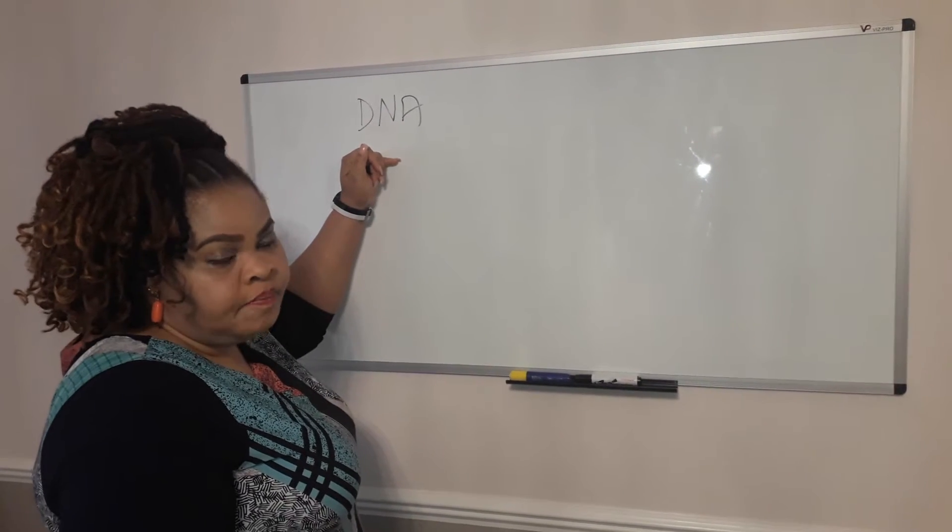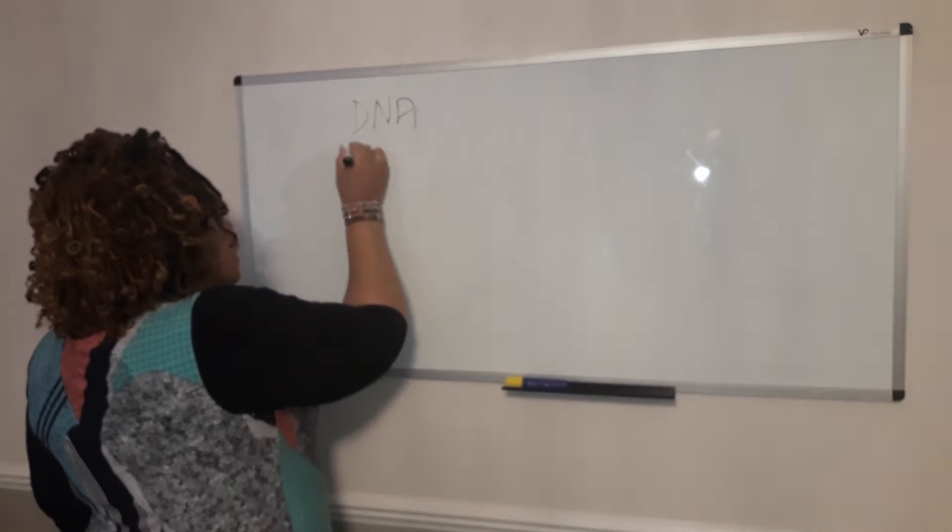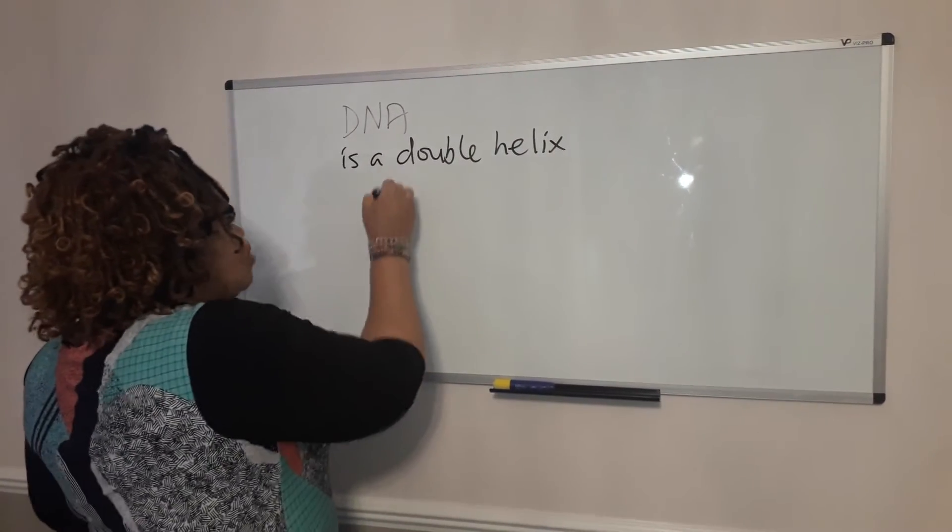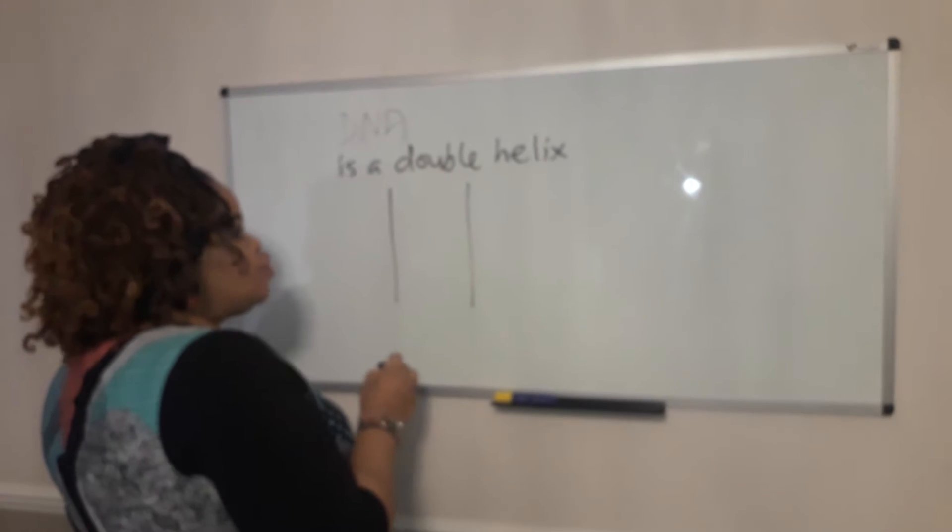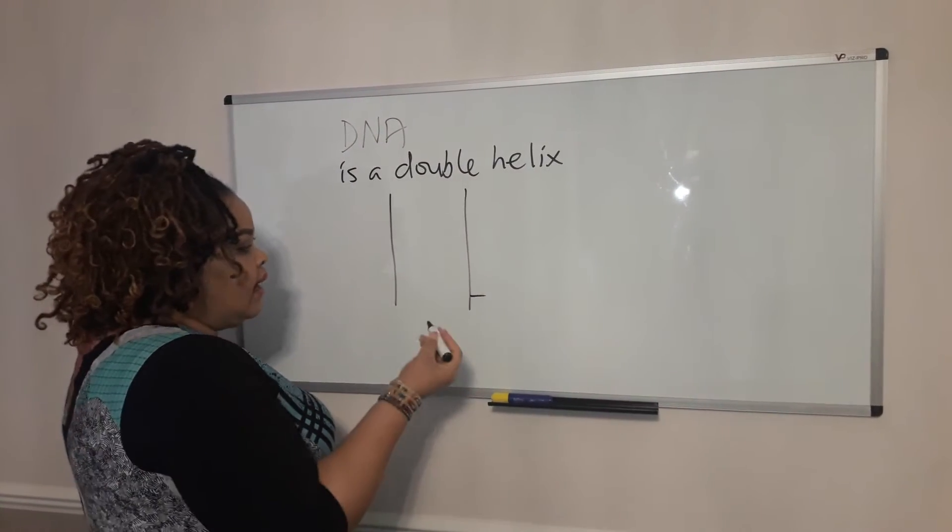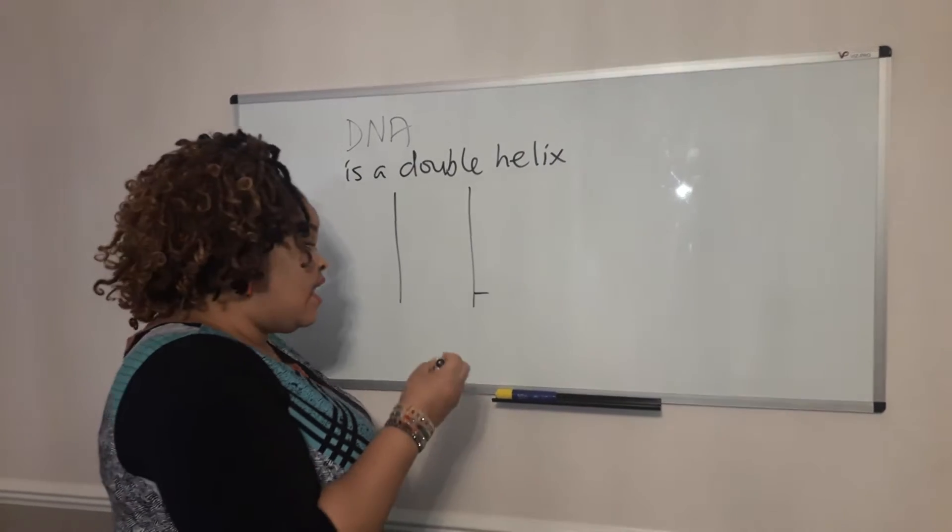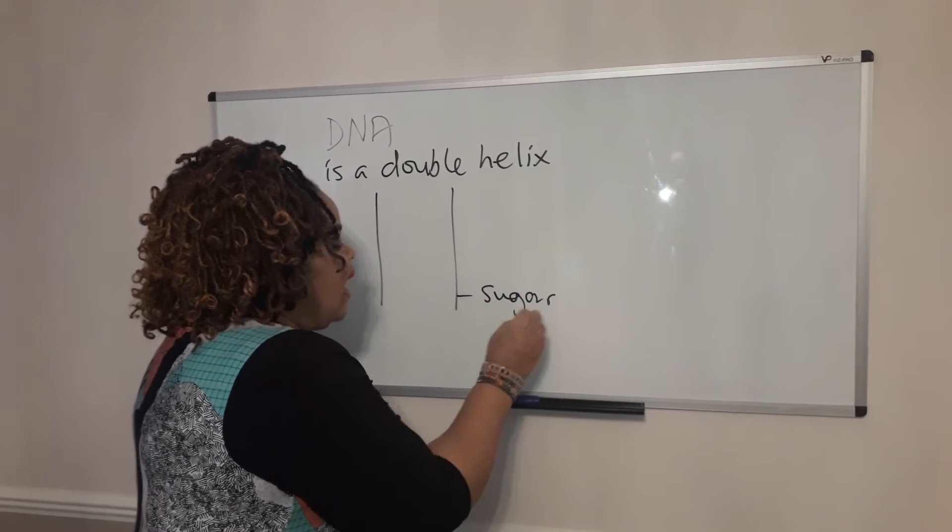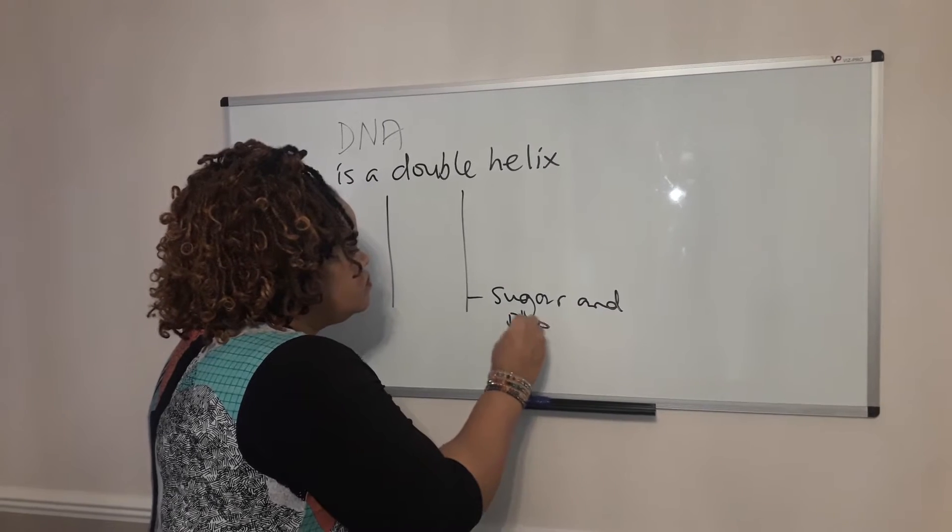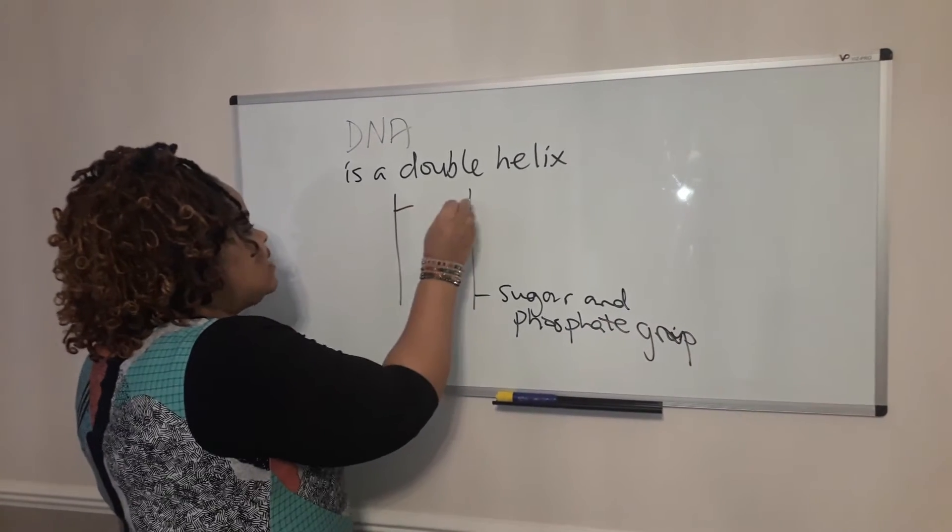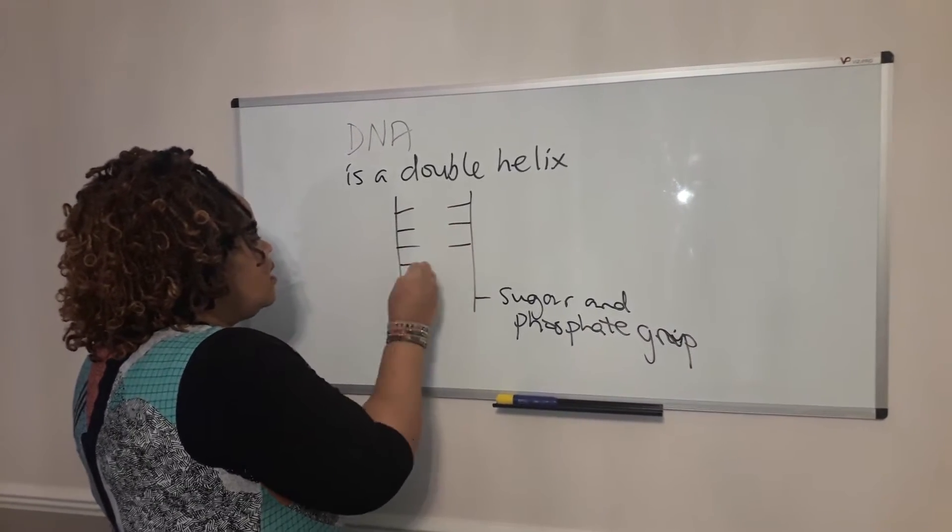A few questions you can be asked about DNA is in terms of the structure. So the DNA is a double helix structure. It's made up of two strands, two backbones twisted together. These are made of sugar and phosphate group, and they are connected by bases. There are four bases that connect the two DNA strands together.